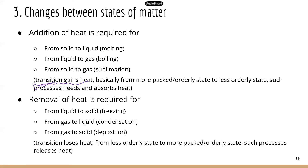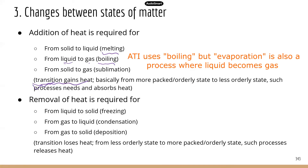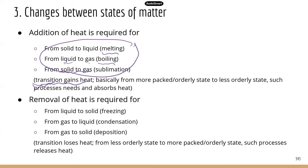From solid to liquid, that's called melting. Liquid to gas, that's boiling — when you boil water, water becomes water vapor. From solid to gas, that's sublimation — you can skip the liquid phase and change something directly from solid to gas. Remember, all these transitions gain heat; they need to gain heat to overcome that intermolecular force to make the molecules go farther from one another.